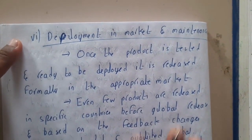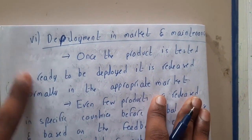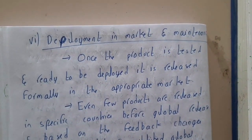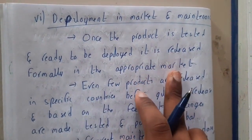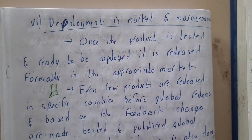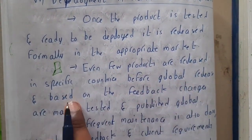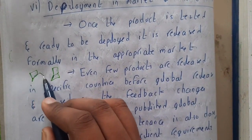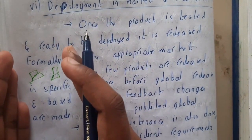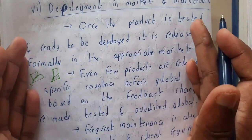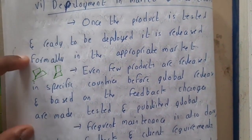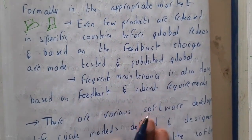After testing, you move to deployment in the market and maintenance. Once the project is tested and ready, it is released formally in the appropriate market — for example, an Android app would be released on the Play Store. Some products are released in specific countries before a global release; companies like Supercell release games in particular countries first, and based on that success, decide whether to release globally or reject the project. Once deployed, frequent maintenance is also carried out.